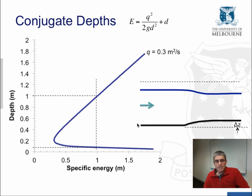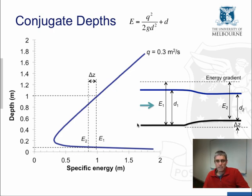To understand this specific energy curve a little bit more, let's consider this example where horizontal flow passes over a slight rise in the channel of height delta Z. We consider the specific energy and depth before the rise at cross section one and on top of the rise at cross section two. If we imagine at cross section one, the specific energy is E₁ and the depth is D₁.